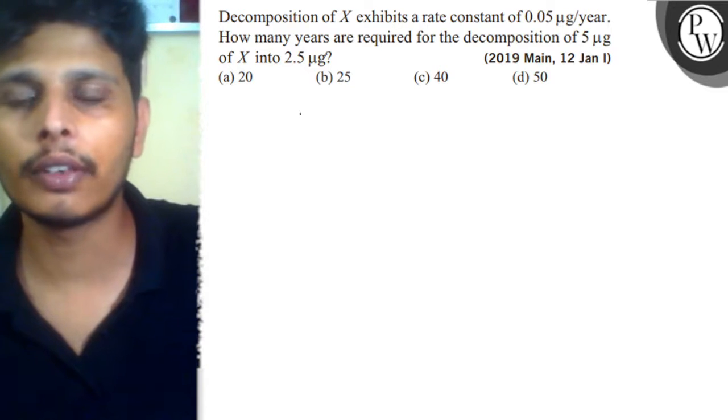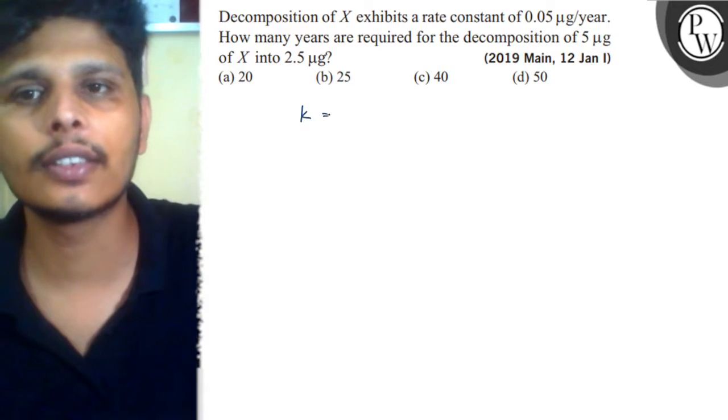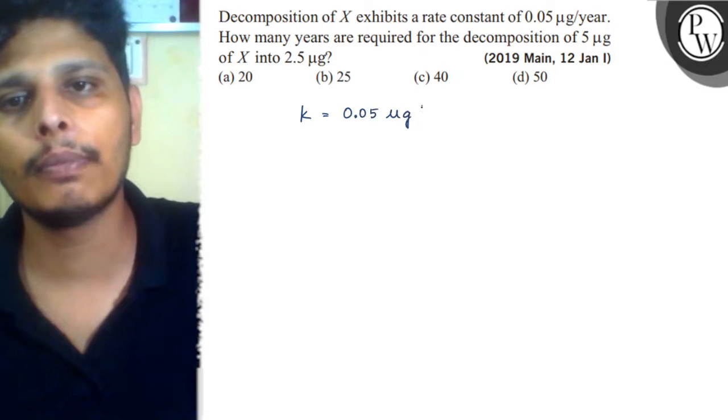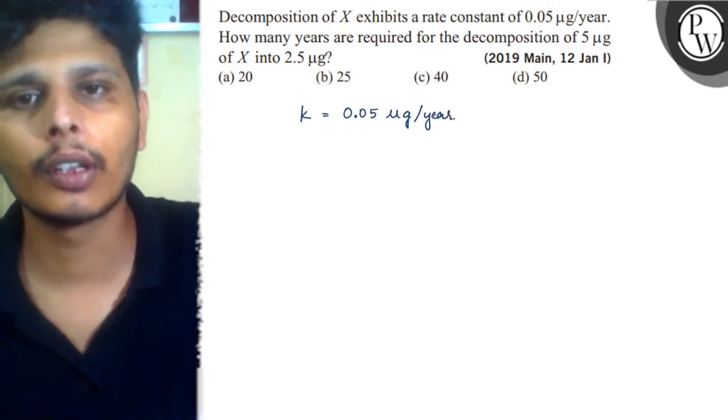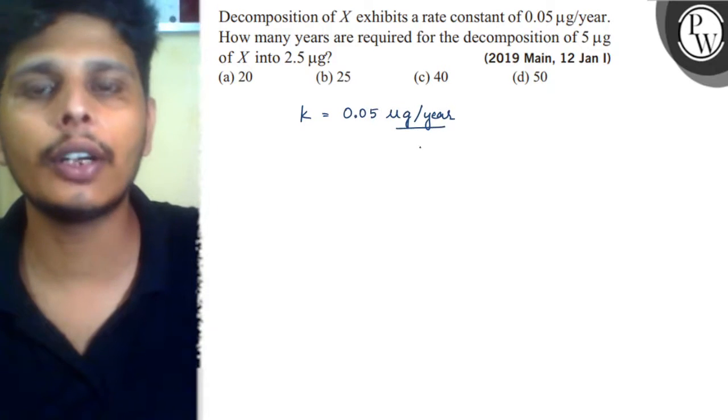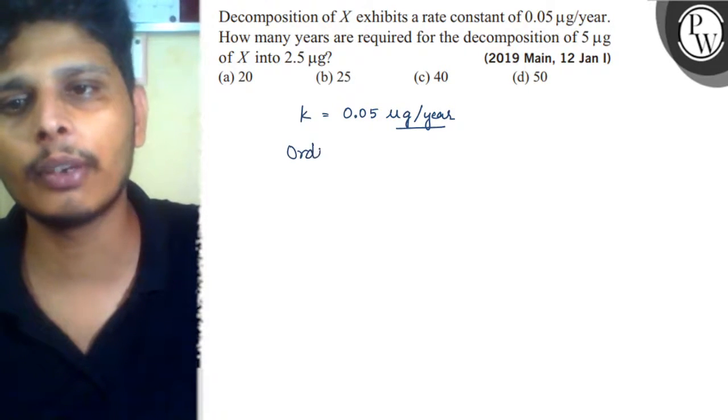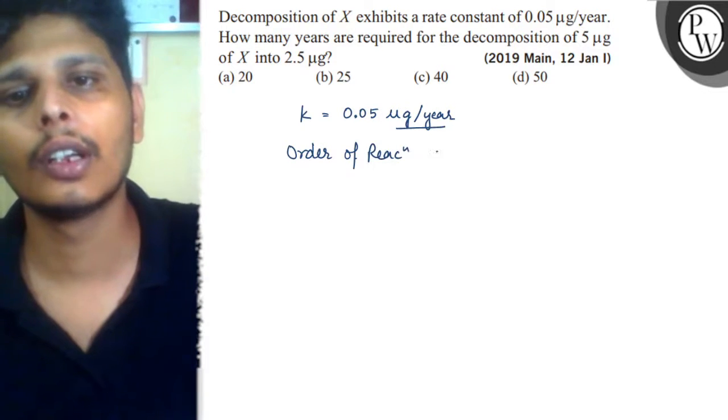So the value of rate constant is 0.05 microgram per year. So according to the unit of this rate constant, we can say the order of reaction will be order of reaction is zero.